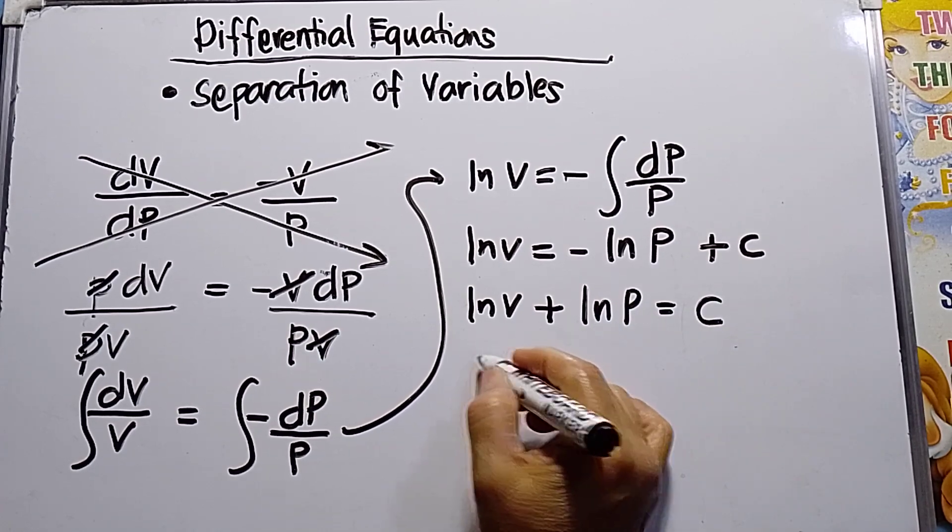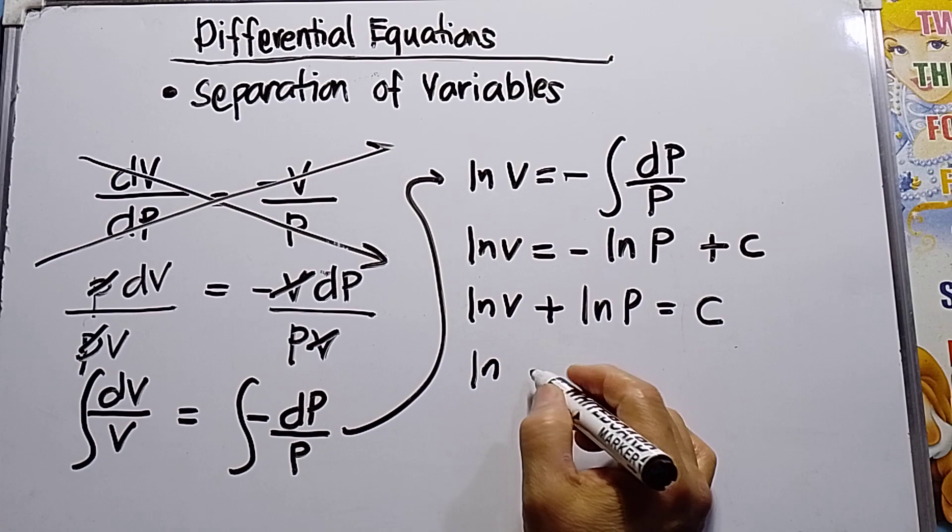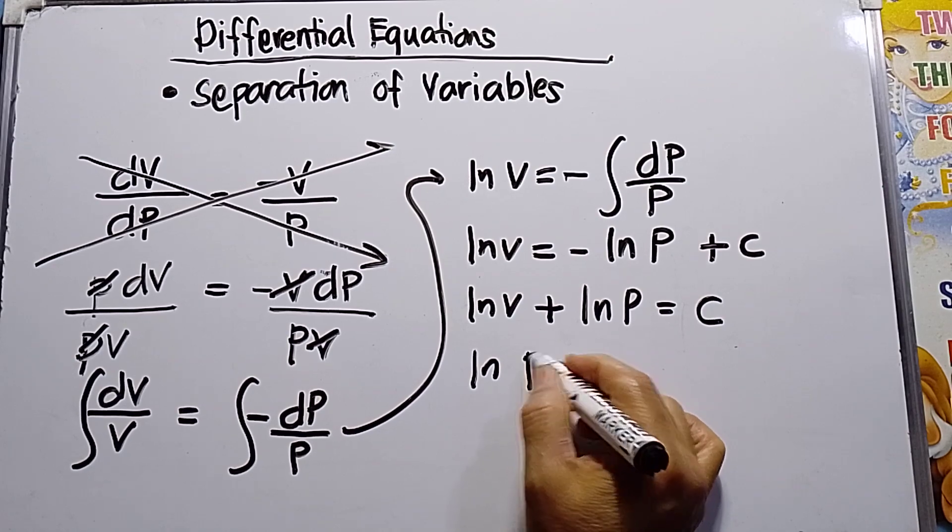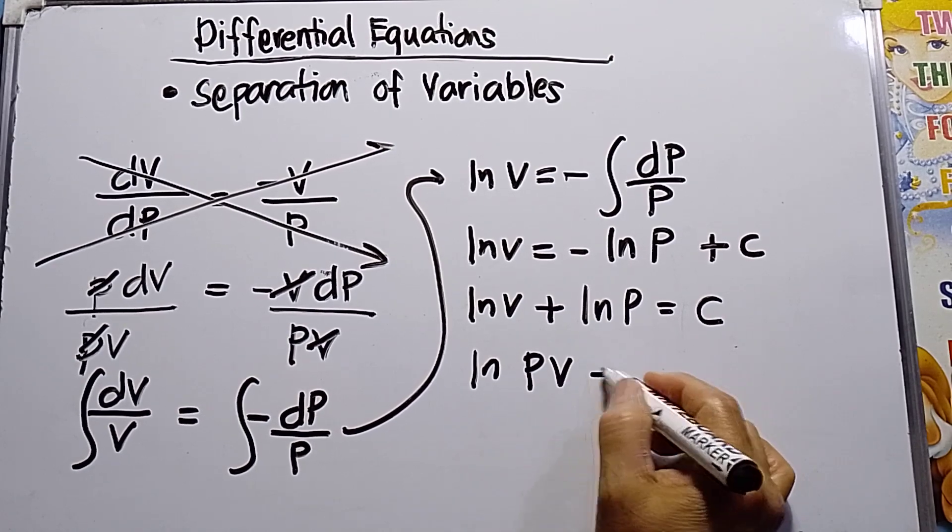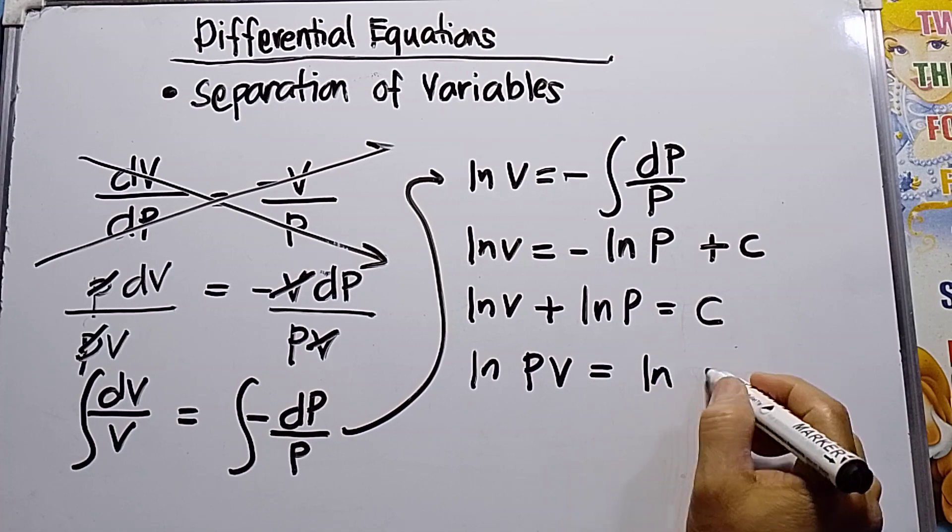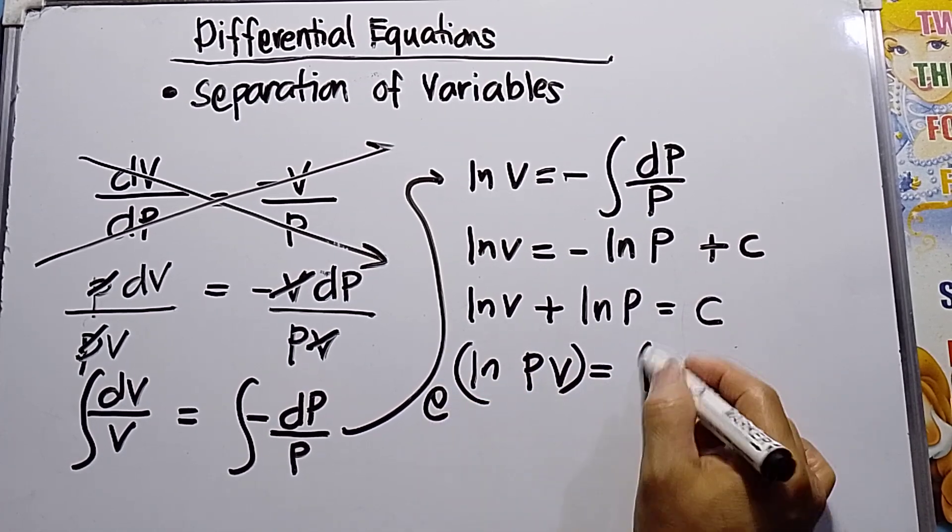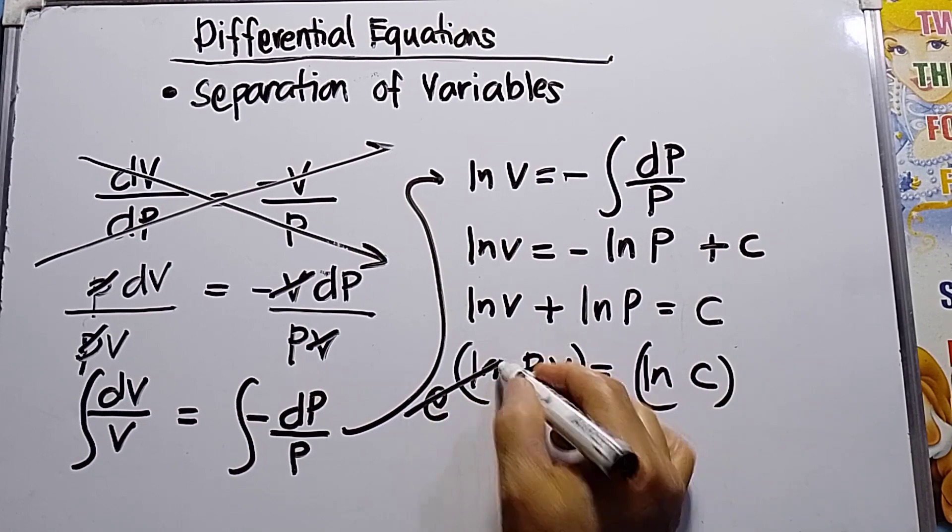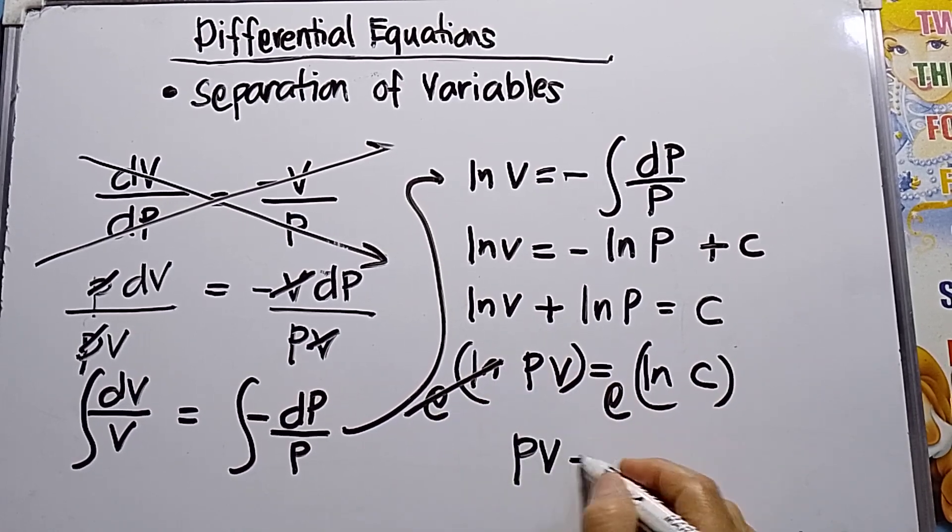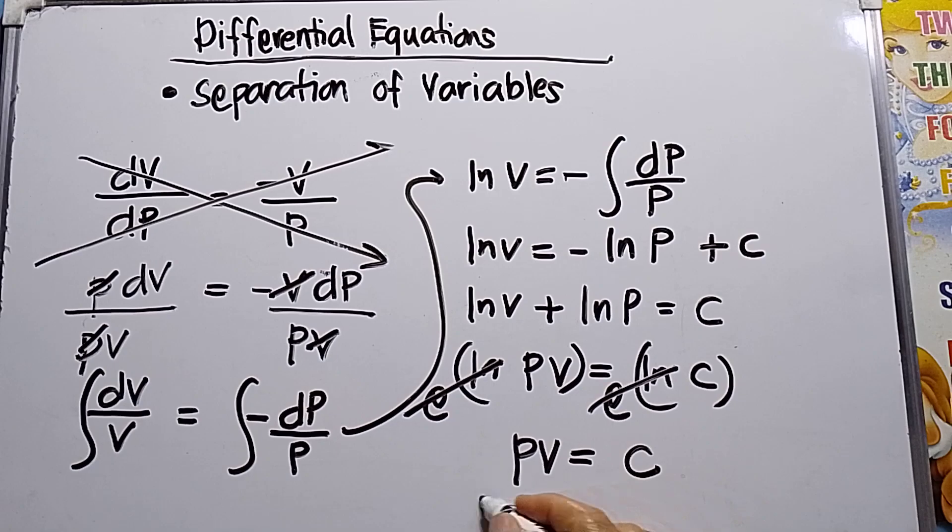Or I can write this one in a formal form, this will be P times V is equal to ln C. So multiply e both sides, so this will be crossed out. So PV is equals to C. That's all.